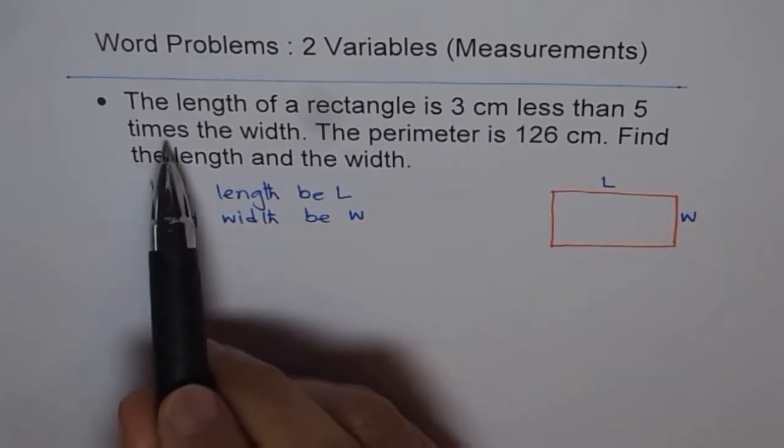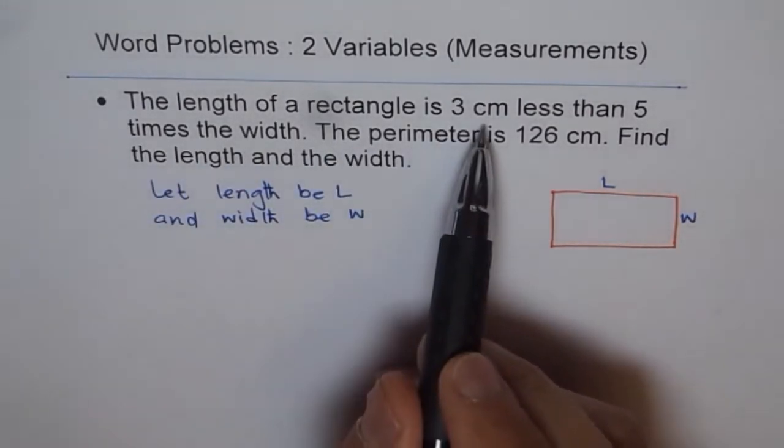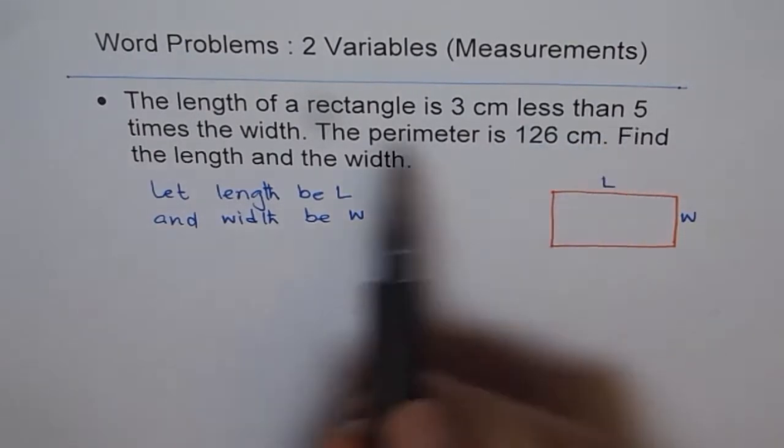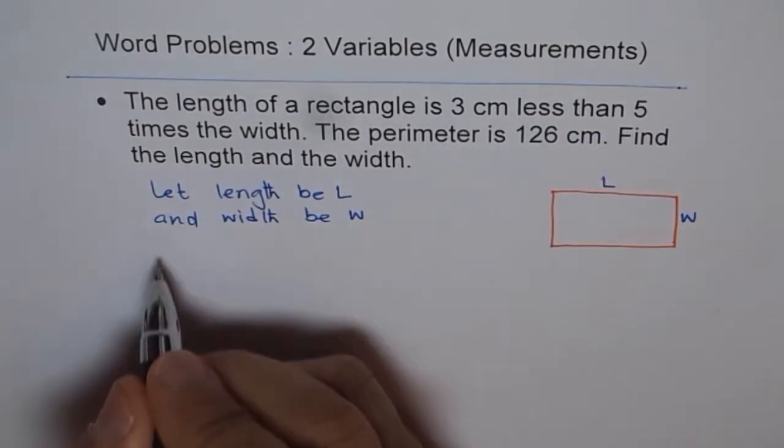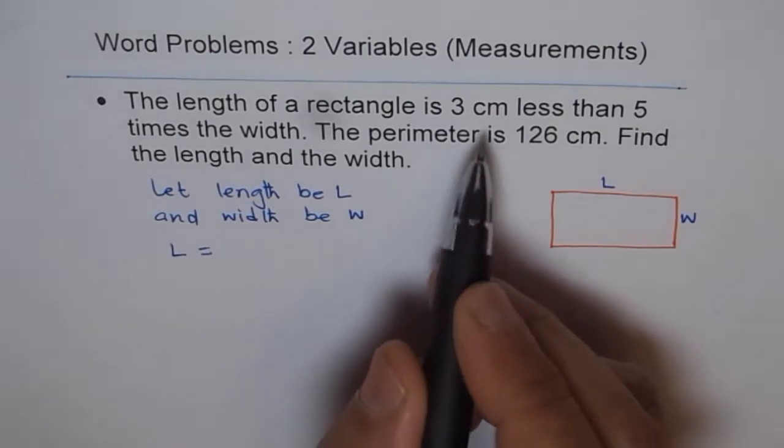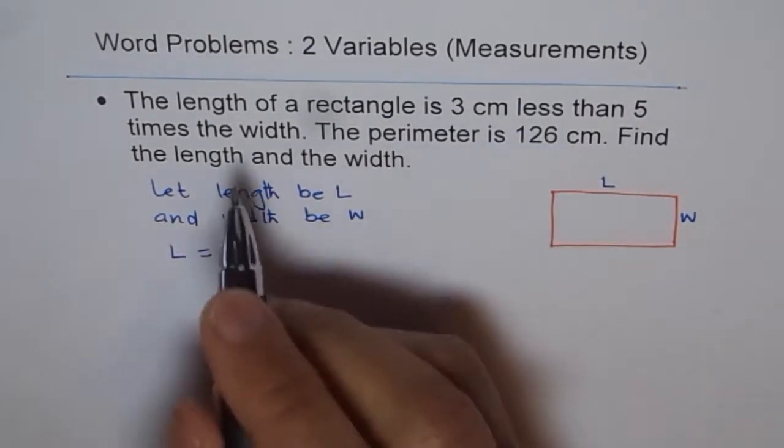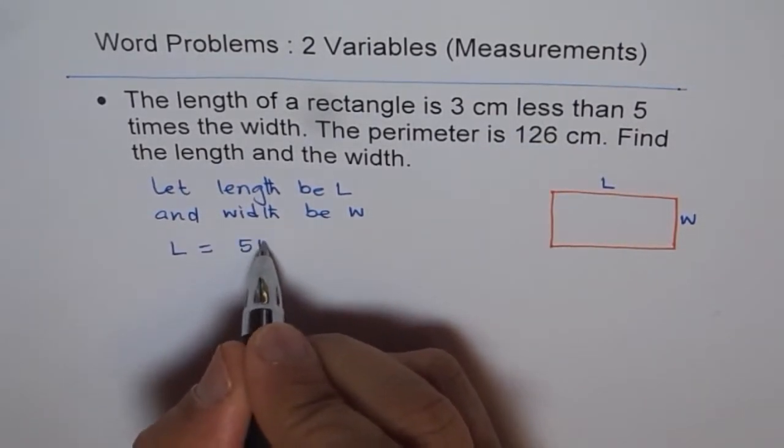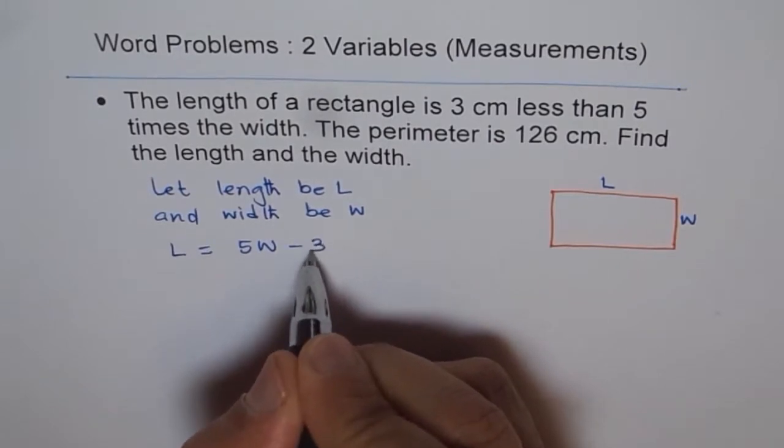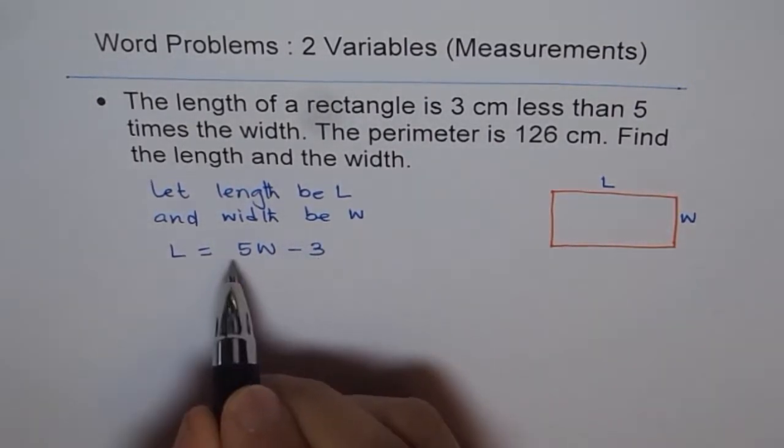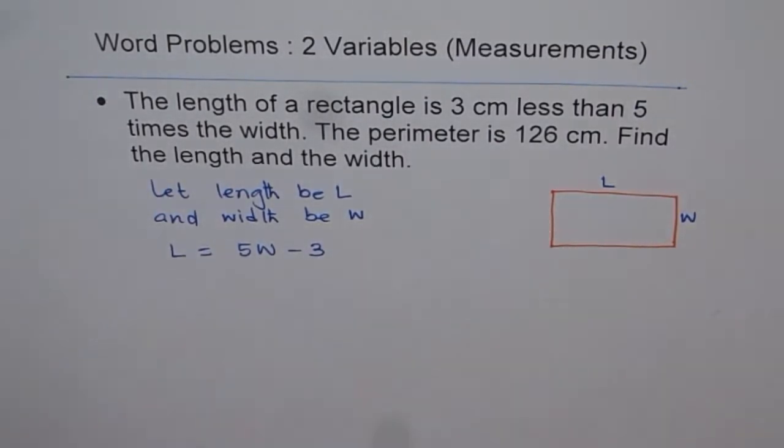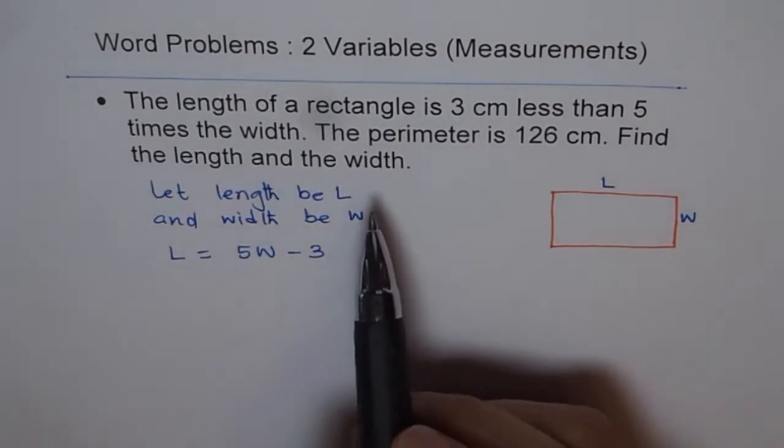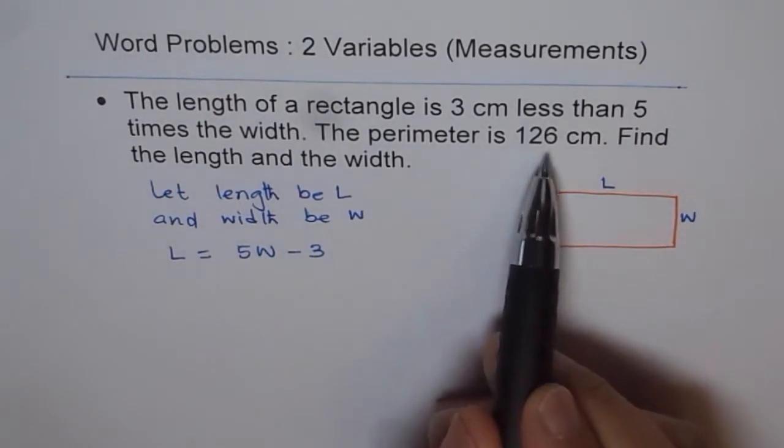The question is the length of a rectangle is 3 cm less than 5 times the width. That means length is 3 cm less than 5 times, so 5 times W minus 3. So it is 3 cm less than 5 times the width. So that is the equation which you get from the first statement. The second one is the perimeter is 126